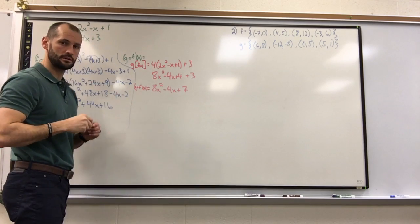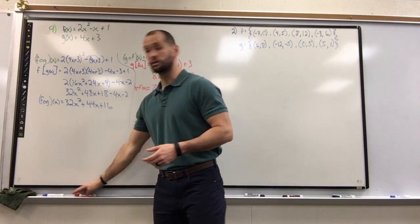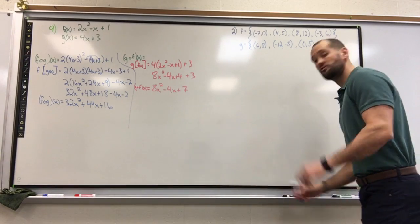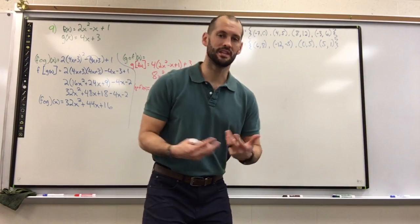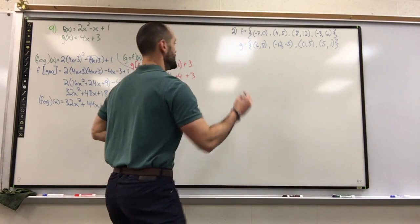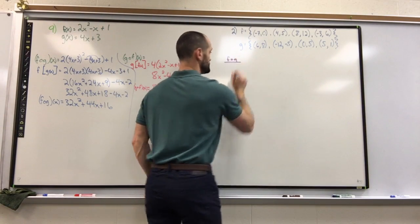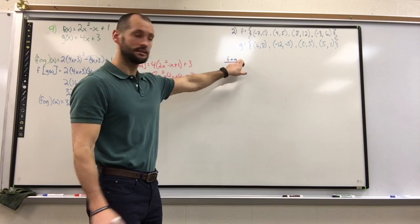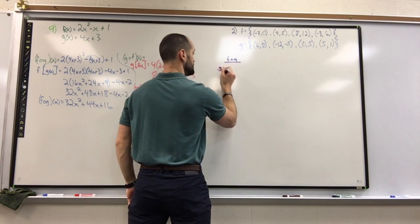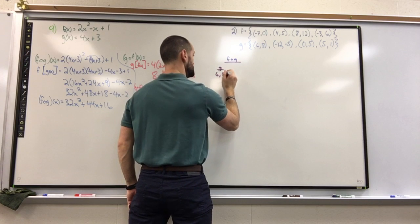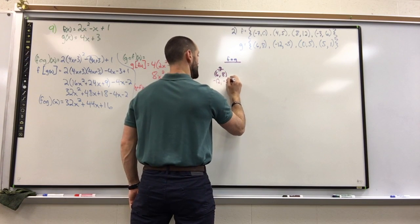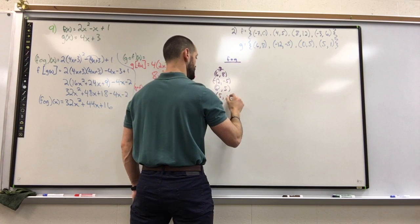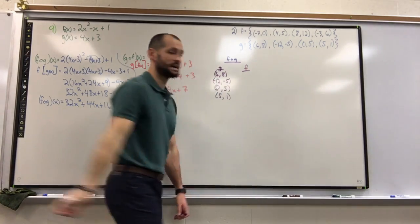Okay, that's how you treat function composition when you're given polynomial functions. Now if they give you a set of points, watch very carefully on how I set this up. My setup I call the inside handoff method, and you'll see why in a second. If they're asking for f of g, what's mentioned second goes first. So because g is mentioned second, I'm going to list all my g function's points: (6, 8), (-1, -5), (0, 5), and (5, 1). Okay, now here's where the inside handoff occurs.